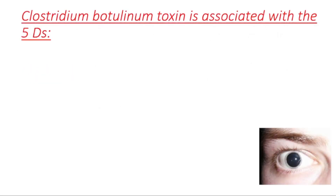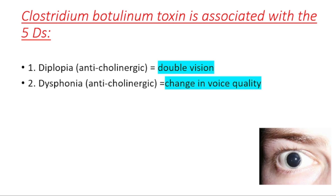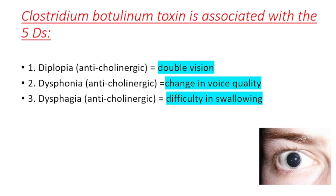We have five D's — these are the signs of botulism. The first one is diplopia, which is double vision. The second one is dysphonia, which is a change in voice quality. The third D is dysphagia, which is difficulty in swallowing.